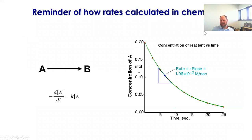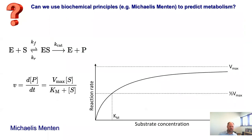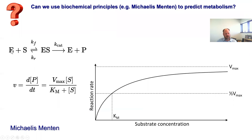Before we get into a more formal analysis of flux balance, let's talk about how rates are typically thought about in chemistry. If we think about a transition of a chemical from A to B, the reaction rate can be described as the concentration of A multiplied by some constant K. This is classic chemistry, and from that you can extrapolate how enzymes behave — the famous example being Michaelis-Menten kinetics, described in terms of Vmax, the maximum velocity of an enzyme, and Km, which describes the affinity between the enzyme and the substrate.